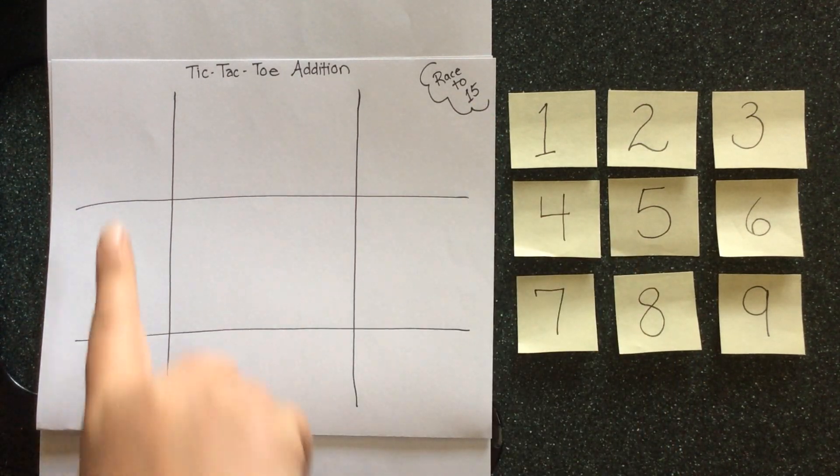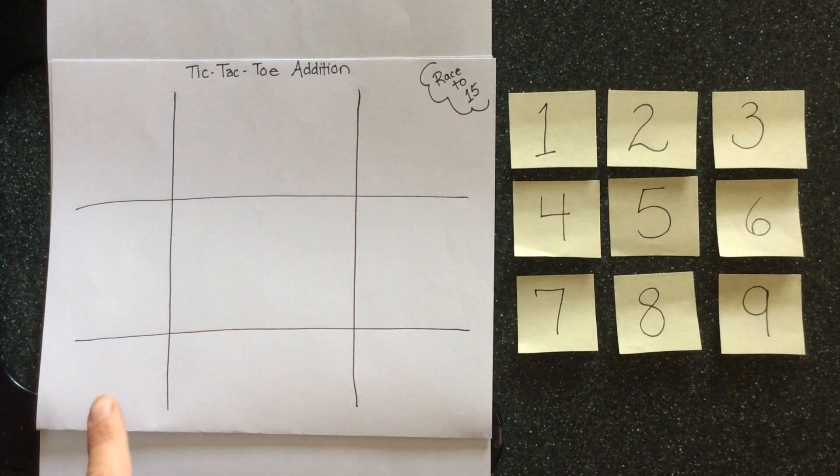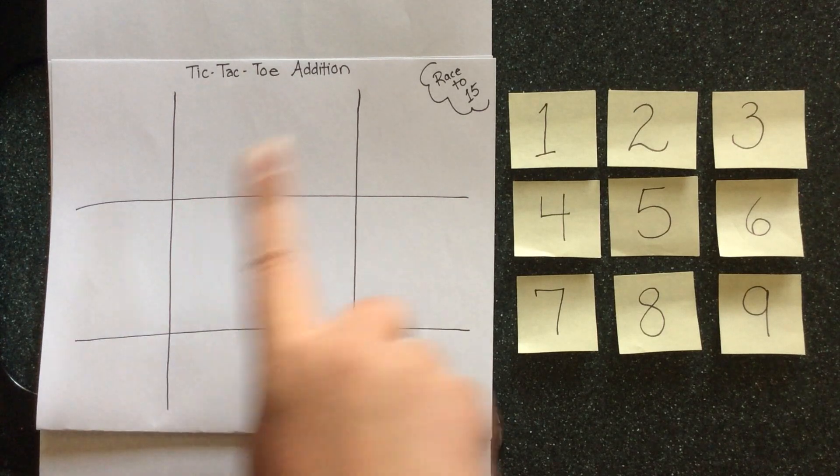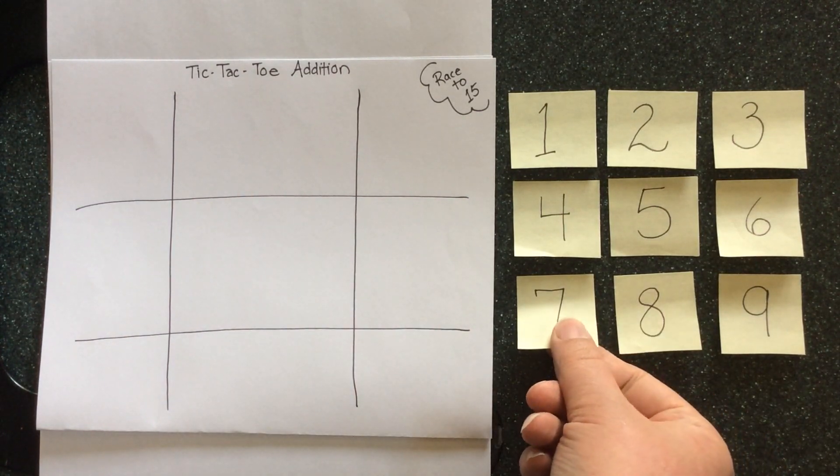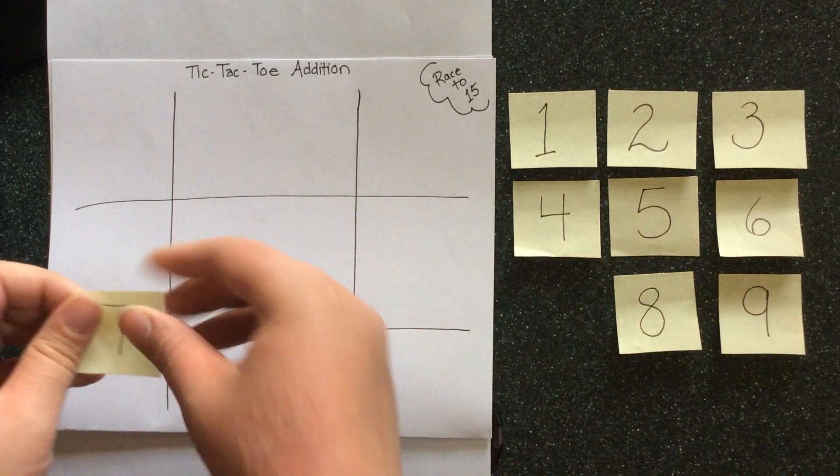So your goal is to have a full line and place the last number that makes that line add up to 15. The first person will go and they will choose a number and they'll put it on the board.